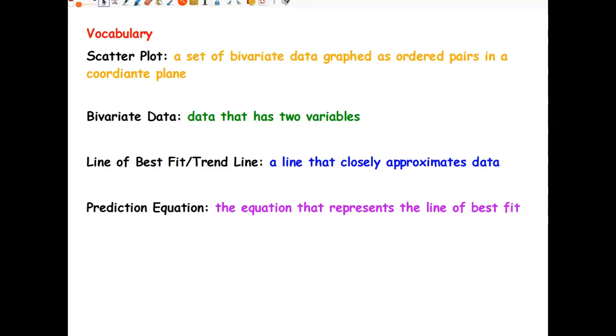So a scatterplot is a set of bivariate data. Below it, I gave you the definition of bivariate because some of us may not know it. Bivariate data is data that has two variables. If you think about the Matrix movies or the movies where they have the black screens with the green numbers, it's always zeros and ones. That is a bivariate set of data. So it is bi because it stands for two. Just like bicycle is two wheels. Binomial has two parts. The prefix bi stands for two.